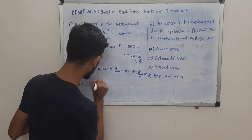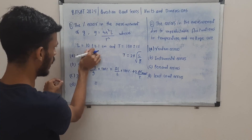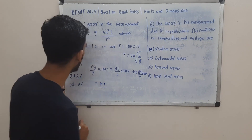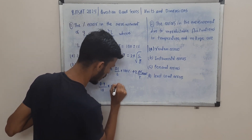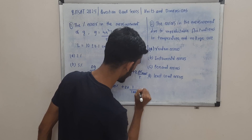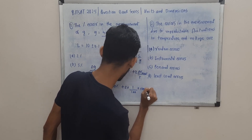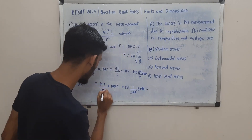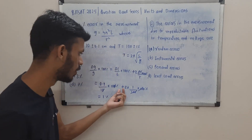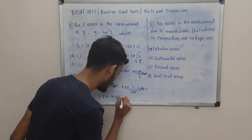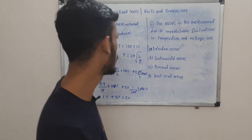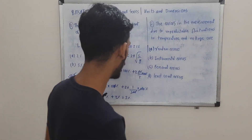Let's calculate: δL = 0.1 and L = 10, so that's 1%. For T, it's 2 × (1/100) × 100% = 2%. So 1% + 2% = 3%, which is option C. These are quite straightforward questions — you just need to know the logic of error analysis.